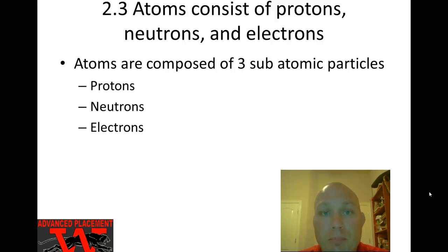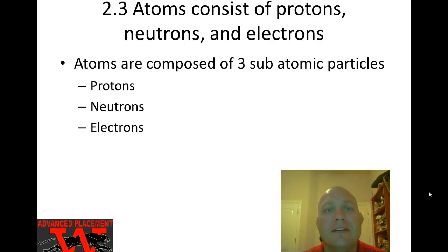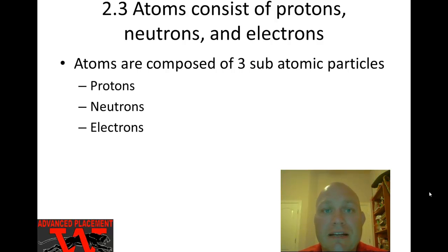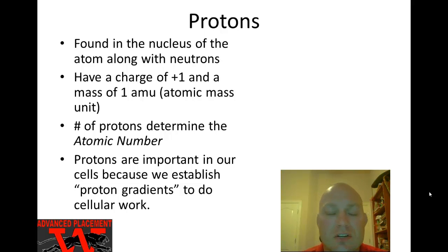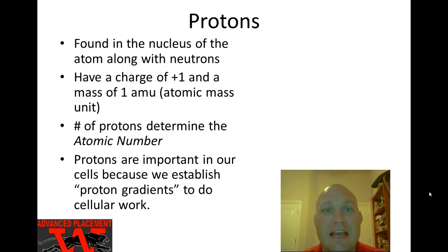Another equally important trace element is iodine, shown here in Morton iodized salt. Iodine is used to make hormones in the thyroid gland in the neck. When the thyroid doesn't get an adequate supply of iodine, you can form a goiter — an enlargement of the thyroid, as seen in this image. You don't see this often in the United States because we iodize our salt, but in underdeveloped parts of the world with poor diet or poor soil, it's much more common.